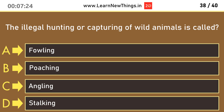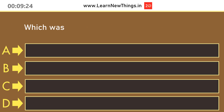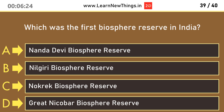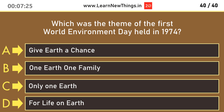The illegal hunting or capturing of wild animals is called Poaching. Which was the first biosphere reserve in India? Nilgiri Biosphere Reserve. Which was the theme of the first World Environment Day held in 1974?